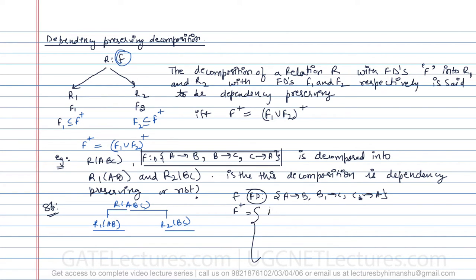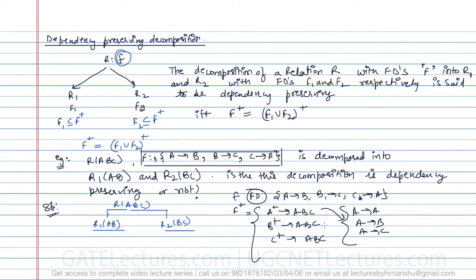So A can determine A, B, and C. Similarly, B can determine A, B, and C. And C can determine A, B, and C. When breaking these relations, we identify which functional dependencies are valid for each table from F closure.